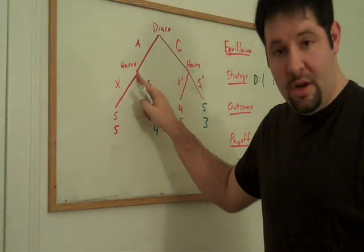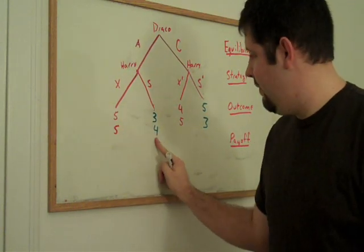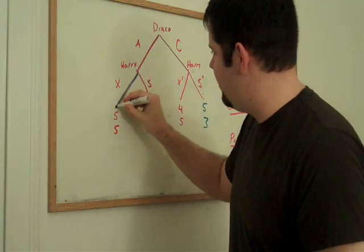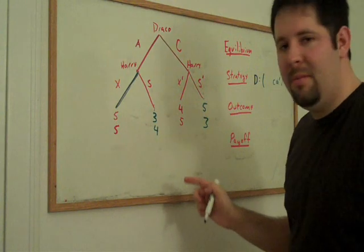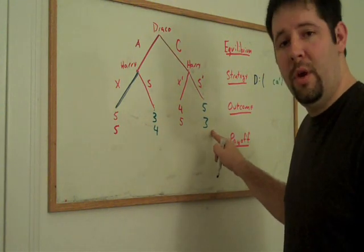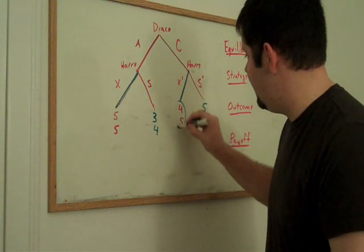So, Harry gets to this node, he's going to be weighing whether he wants five or four. So, he prefers more to less, he's going to choose X. Over here on this side, he's going to be choosing between five and three. Those are Harry's choices and we get to promote these payoffs.